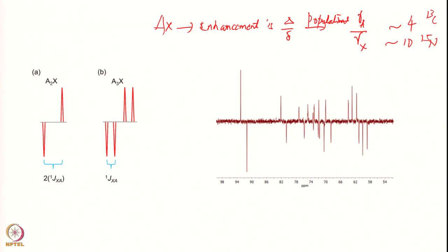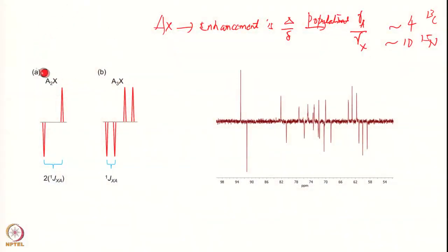Suppose I consider an A₂X system — this is shown in the experimental spectrum, which demonstrates exactly this point. These are identical lines with similar intensities. Of course we have more complex spin systems, not only AX but also A₂X, A₃X, and things like that. In real life you not only have a CH group, you also have CH₂ groups and CH₃ groups. So what happens in the case of a CH₂ group — indicated by A₂X?